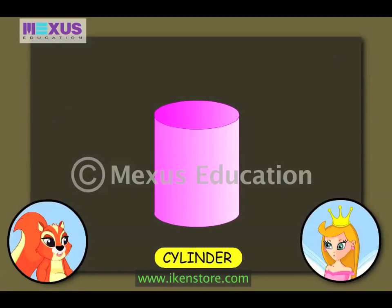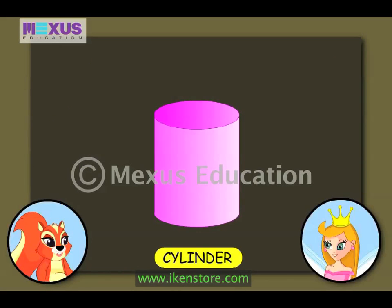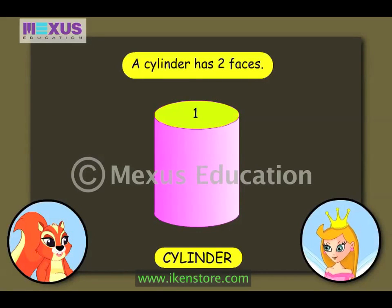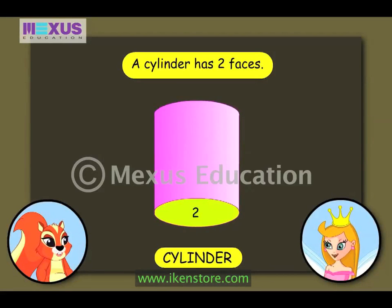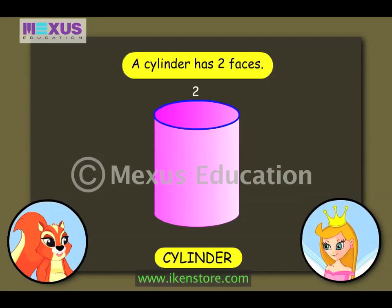The fourth solid shape is a cylinder. A cylinder has two faces, one on top and the other at the bottom, two edges and no corners.